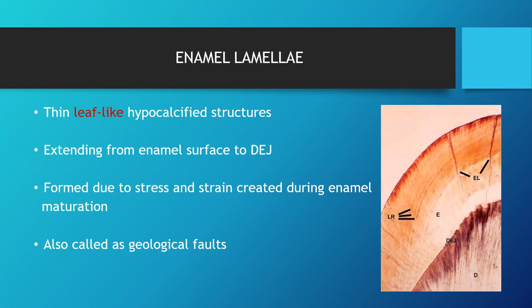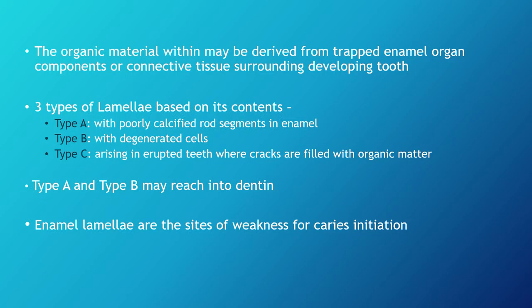Enamel lamellae are thin, leaf-like hypocalcified structures extending from the enamel surface to the DEJ. They are formed due to stress and strain created during enamel maturation and are also called geological faults. The organic material within enamel lamellae is derived from the trapped enamel organ or the connective tissue surrounding the developing tooth. There are three types: Type A — poorly calcified rod segments; Type B — degenerated cells; Type C — arising in erupted teeth where cracks are filled with organic matter. Types A and B may reach into dentin, and enamel lamellae are sites of weakness prone to caries initiation.